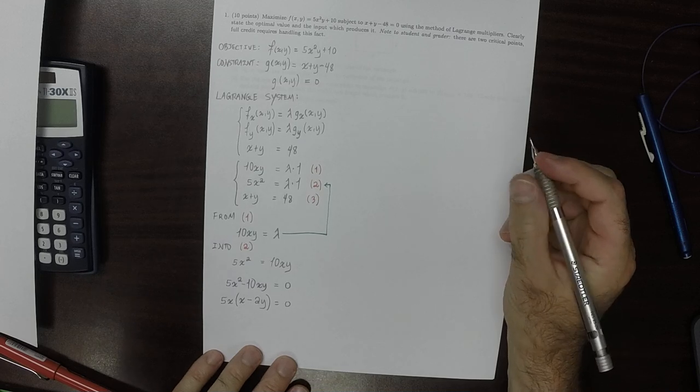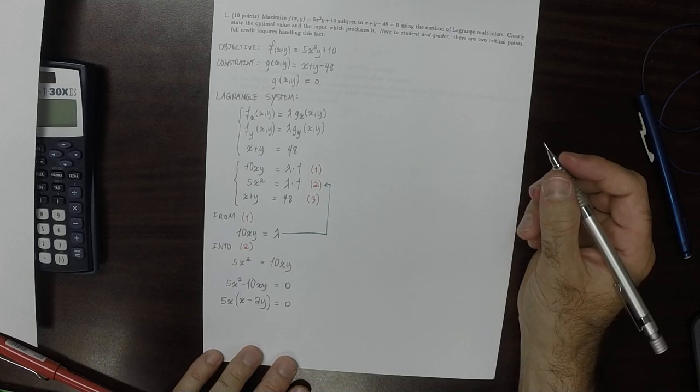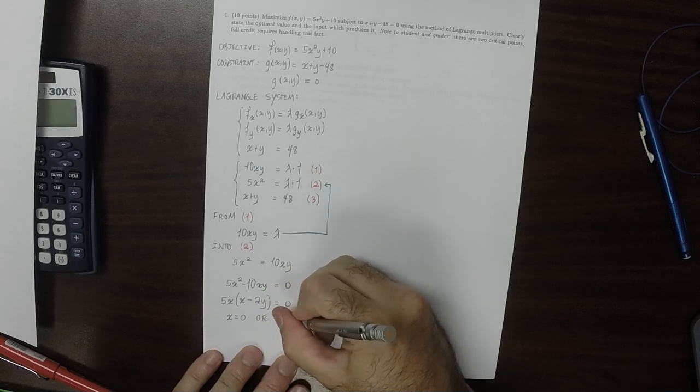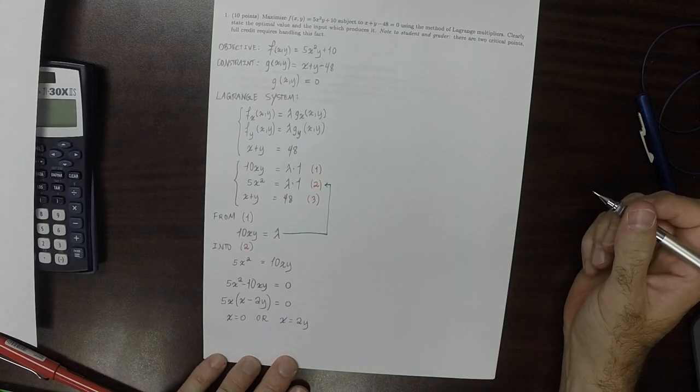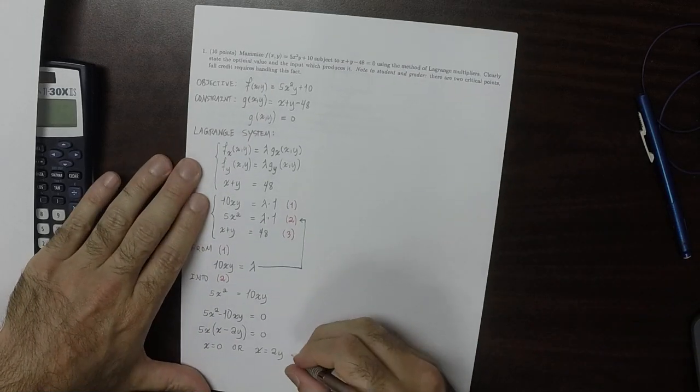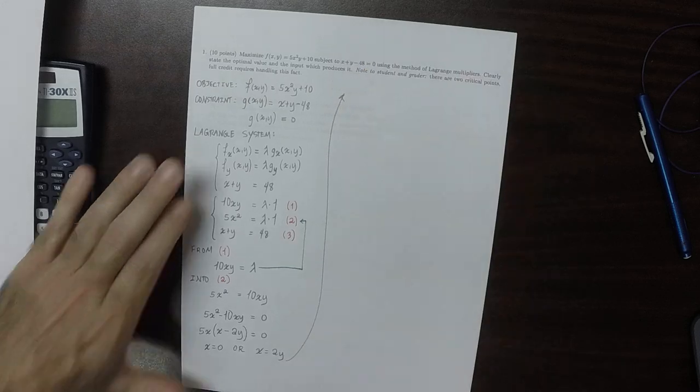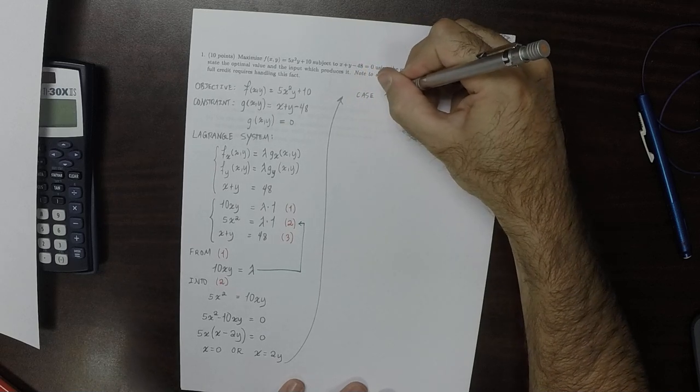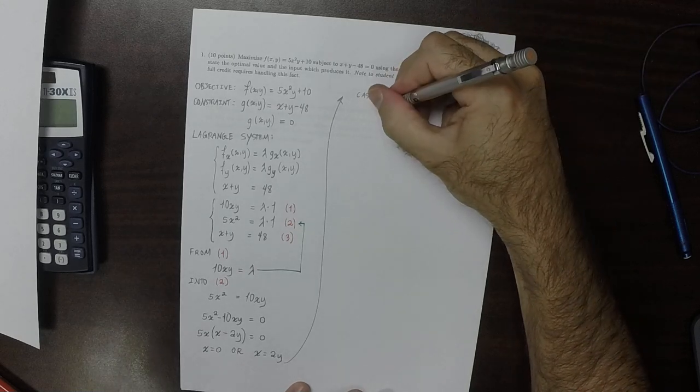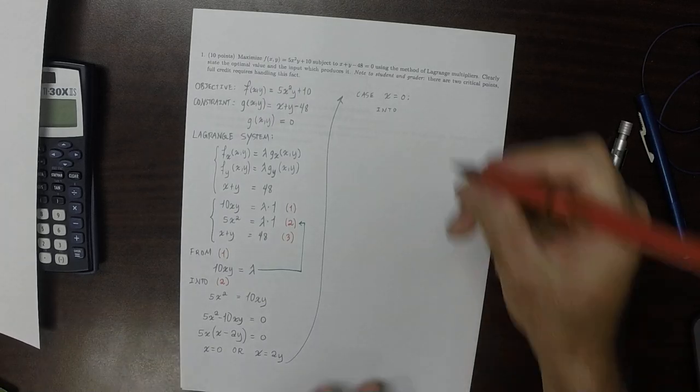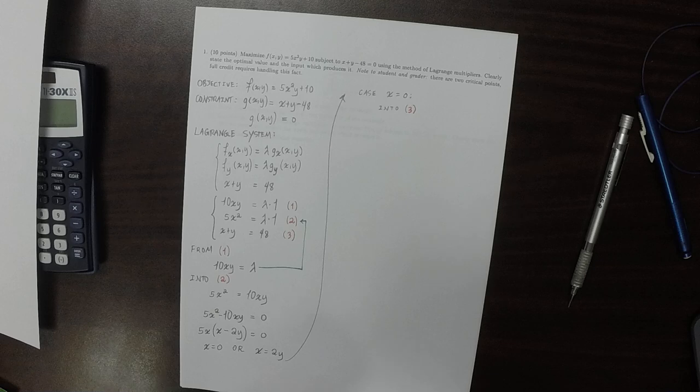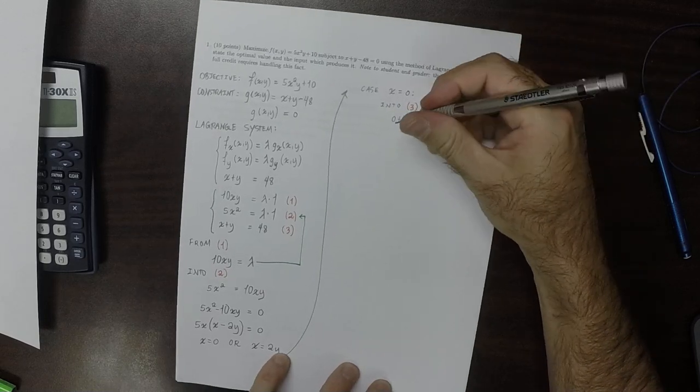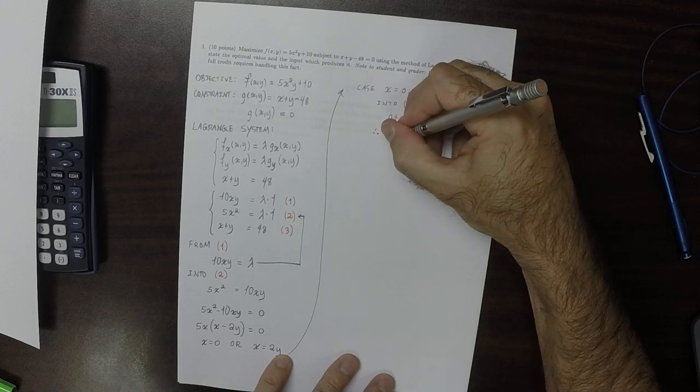So there's two possibilities. One possibility is that x is 0 or the other possibility is that x is 2y. So now the possibilities have split, so the discussion needs to split. In the case that x is 0, we can put that into equation 3. And that tells us that 0 plus y is 48, so that one of the critical points is (0,48).